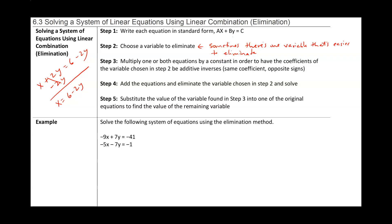Step three is where the actual work happens, because steps one and two are pretty easy. You multiply one or both equations by a constant in order to have the coefficients of the variable chosen in step two be additive inverses. Additive inverses are two terms that add to zero.